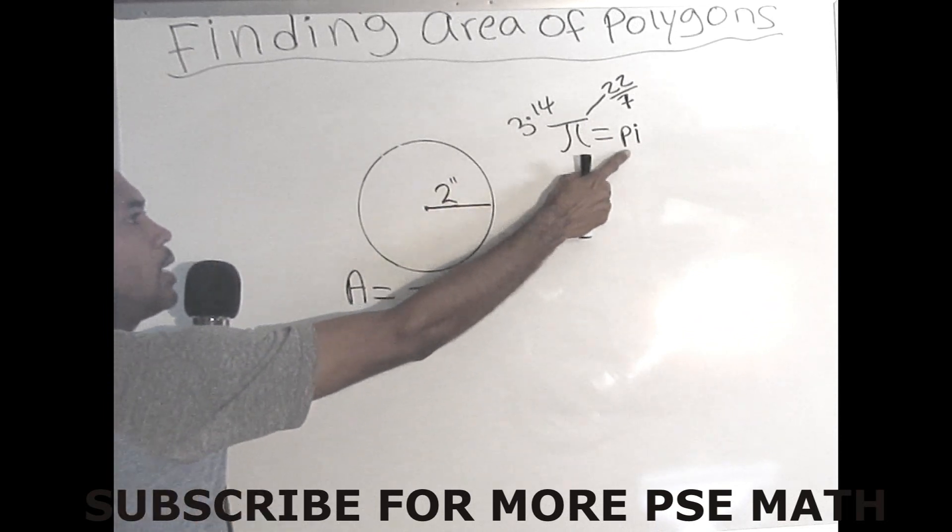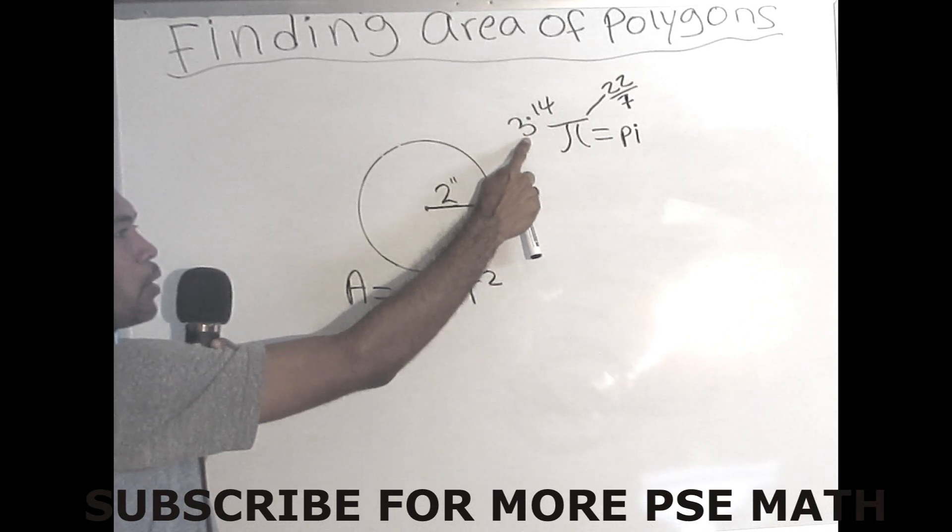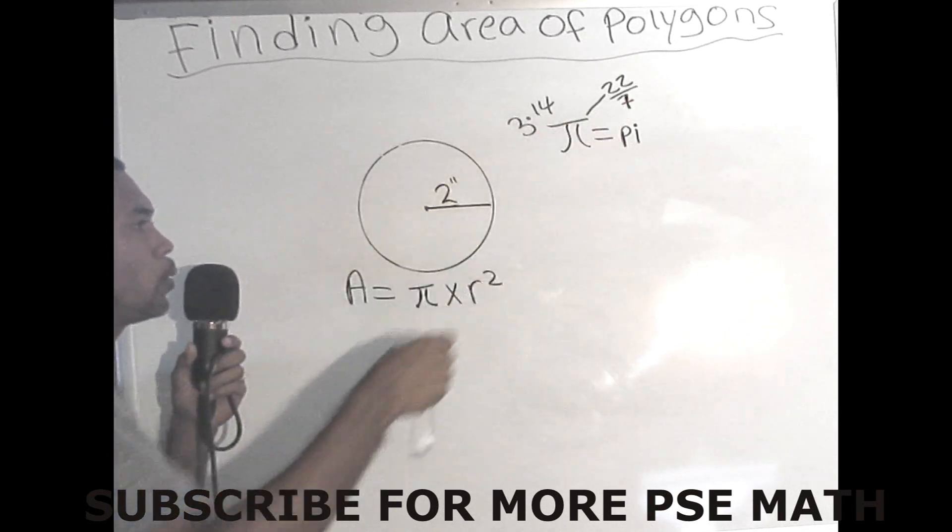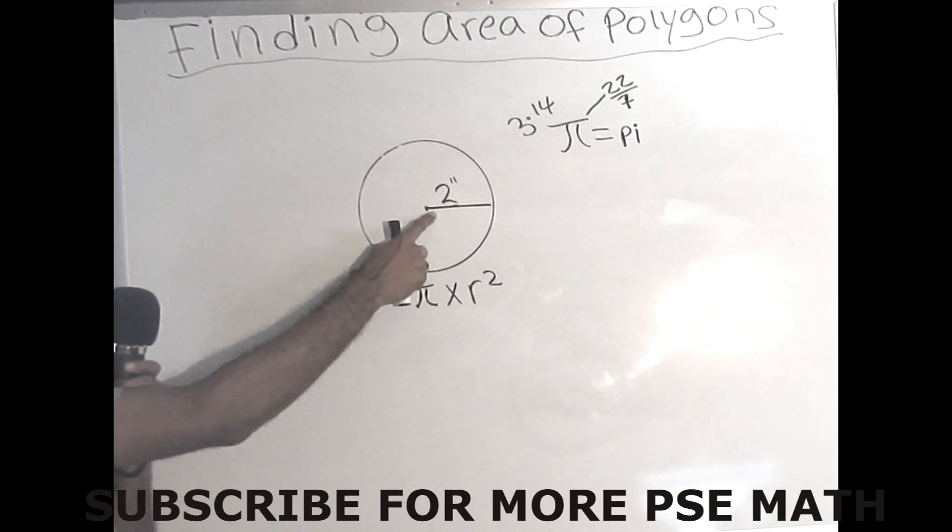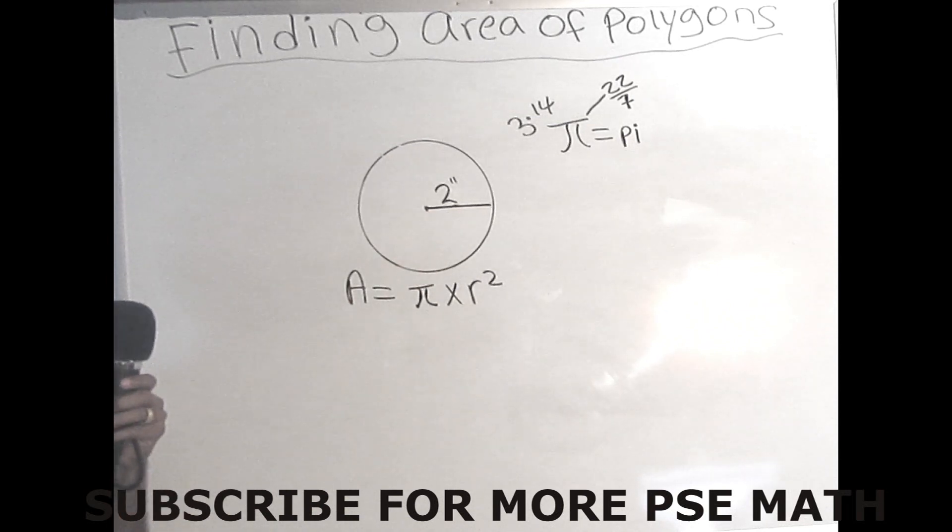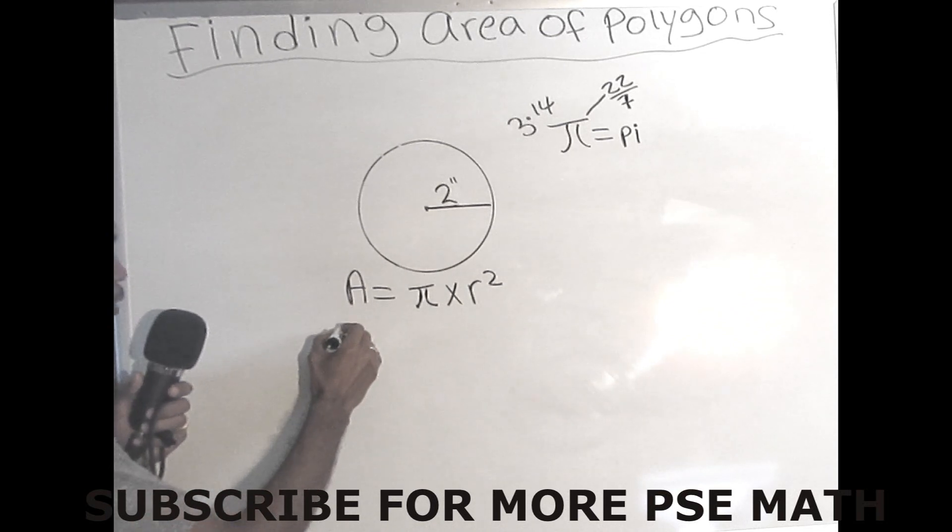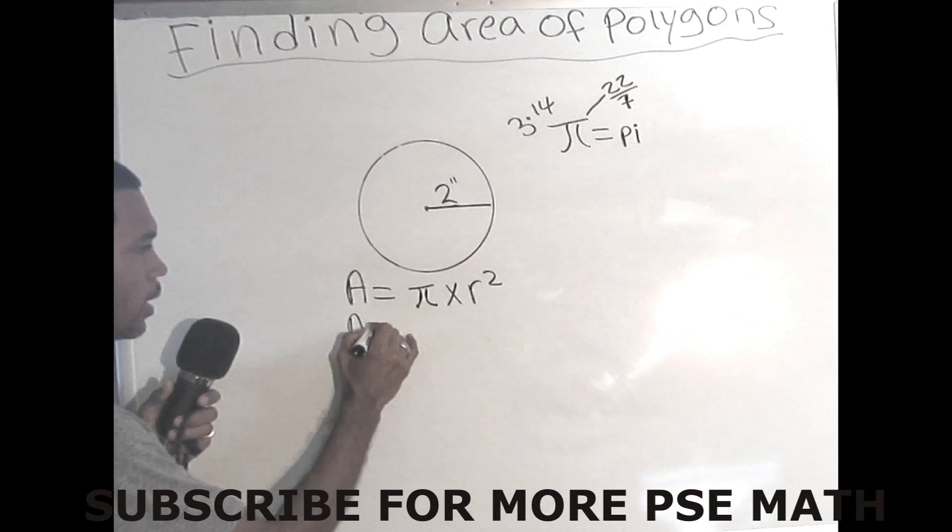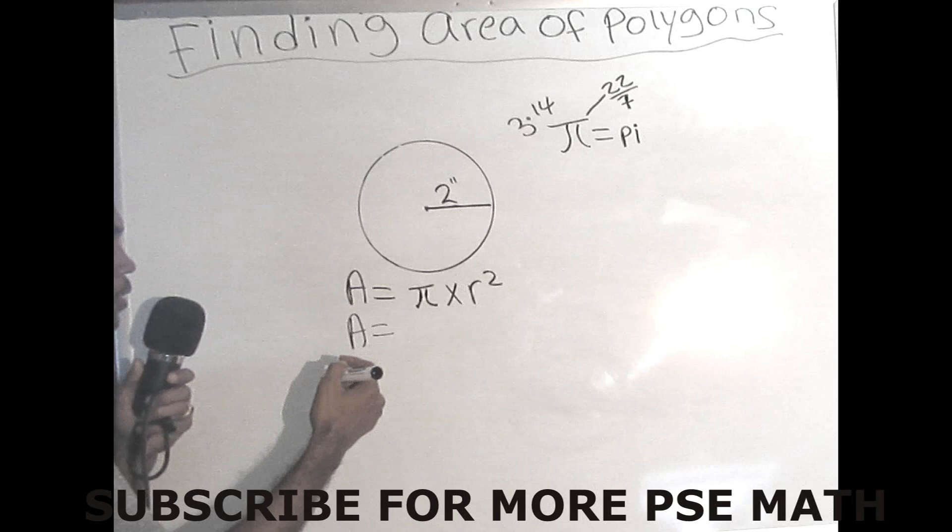So we're going to solve this problem using pi as both of them, as 3.14 and 22 over 7. So here is a pi sign, and remember this pi represents 3.14 or 22 over 7. We're finding the area of this circle with a radius of 2. In order for us to solve this problem, we need to follow the formula. So area equals, remember pi is either 3.14 or 22 over 7.